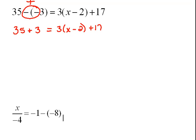So if I rewrite this problem, that becomes 35 plus 3 equals 3 times x minus 2 plus 17. Now, we also have a distribution here. That distribution really needs to be done before we start combining any like terms or moving things around.